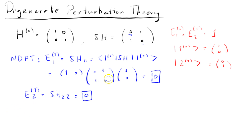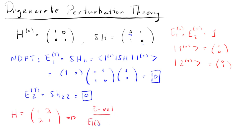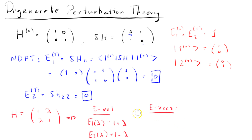But in reality, if we look at our total Hamiltonian, it would be [1, λ; λ, 1]. If you actually do the analysis and find the eigenvectors and eigenvalues, the eigenvalues come out to be E1(λ) = 1 + λ and E2(λ) = 1 − λ. And the eigenvectors come out to be (1/√2)[1, 1] and (1/√2)[1, −1].